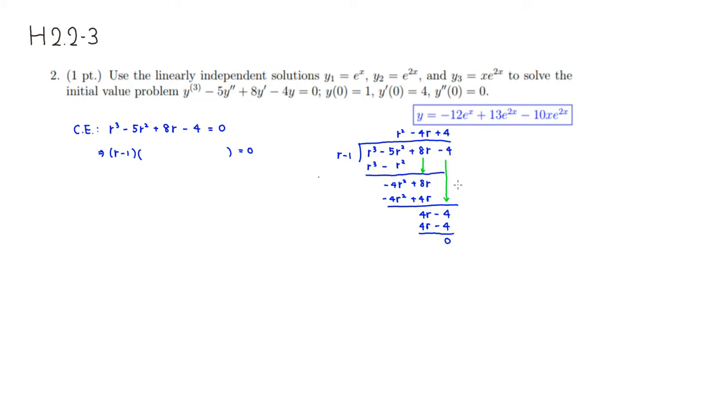So now we found out that the rest is r squared minus 4r plus 4. Now since it's a quadratic expression, we can factor it out. And this one, we can see that it's just going to be r minus 2 squared equals 0. So we know that r value is r equals 1 is one of them.